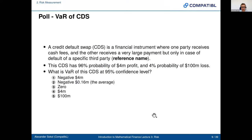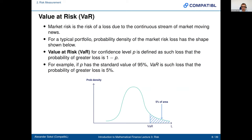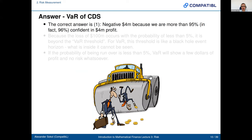The poll winner was negative 0.16 million, which is the average. However, VaR is not the average — the expected profit is the average, but Value at Risk is not. The correct answer is negative four million, because we are more than 95% confident — in fact 96% confident — in a profit.